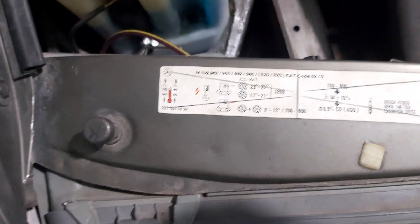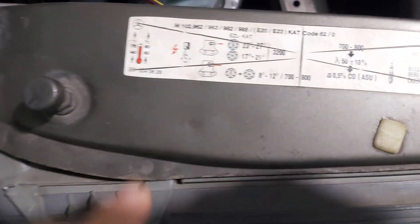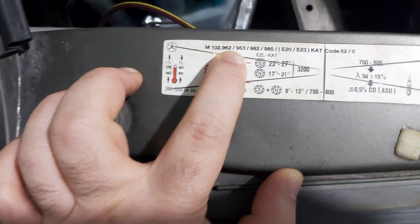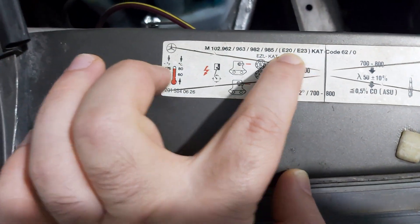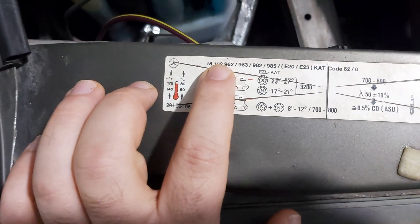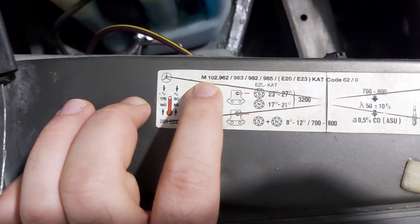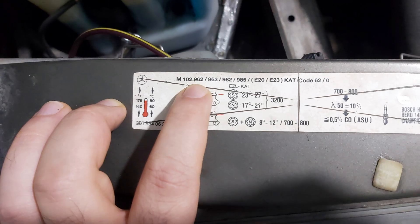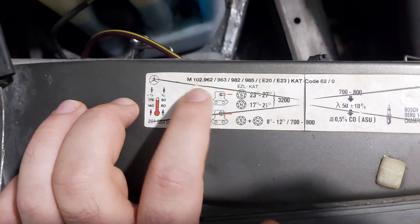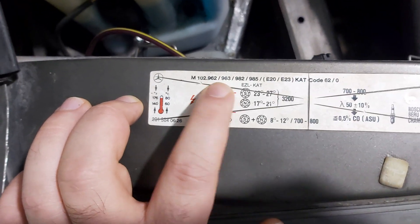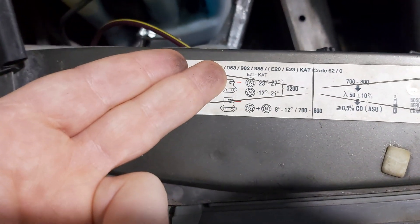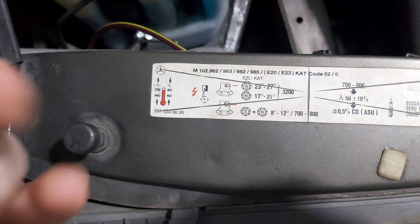At first, what does this mean? M102962 - this is the engine code. For example, 962 is a 2-liter engine, 963 - the difference is only between 190E and W124.